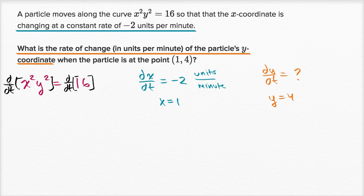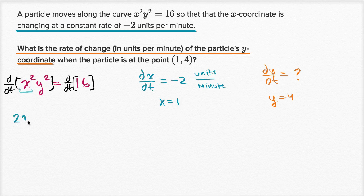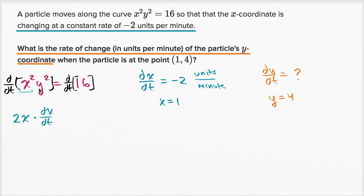On the left hand side, if we view this as a product of two functions, we take the derivative of the first function — the derivative of x squared with respect to x is two x. But we're taking the derivative with respect to t, so we apply the chain rule: it's two x times dx/dt. And then we multiply that times the second function, y squared.